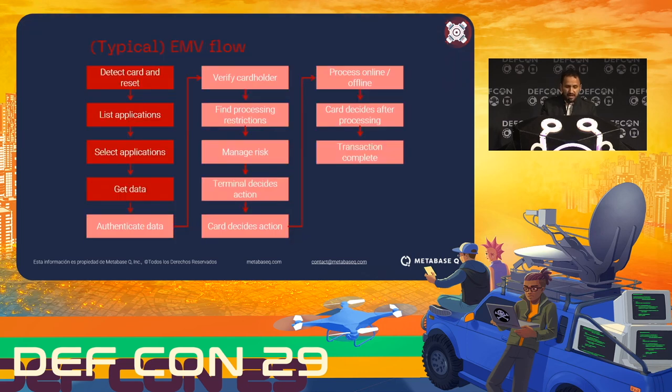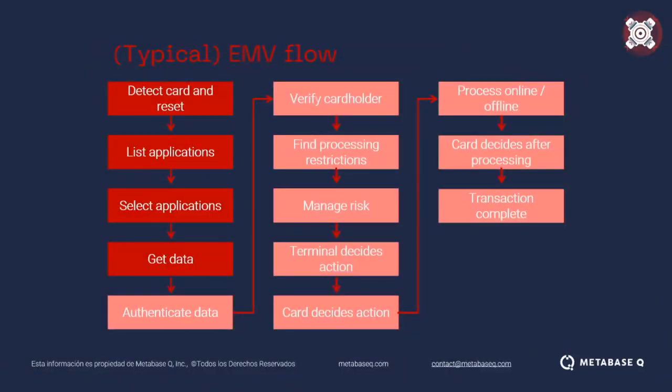This is a typical EMV flow — what basically happens when you insert the card into a terminal. The card is detected and then the terminal lists the applications. At this point the terminal will know if the card is MasterCard, Visa, Amex, or any other brand. After that it selects the application and goes through different processes until the transaction is complete — either accepted or declined.